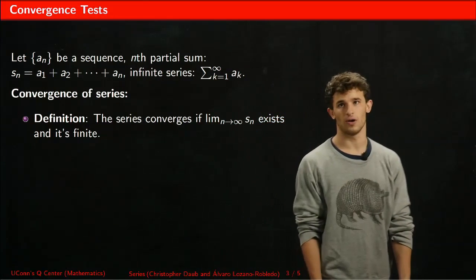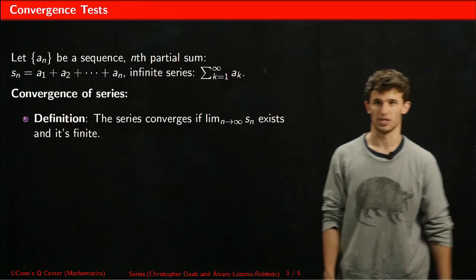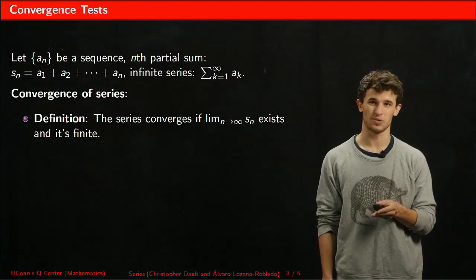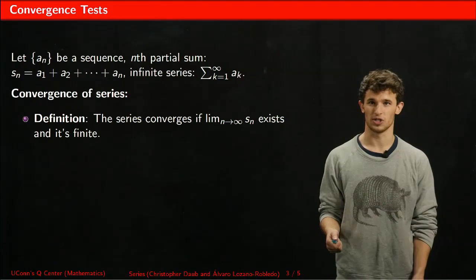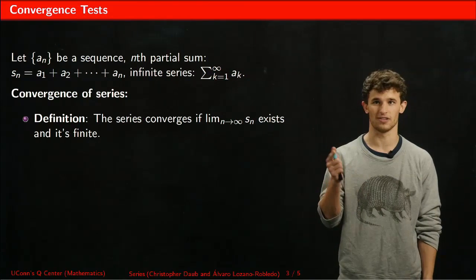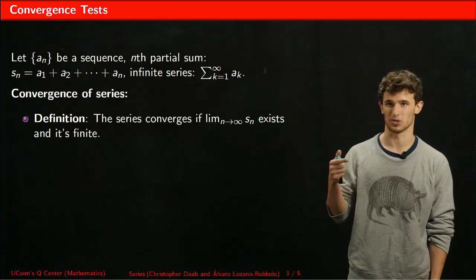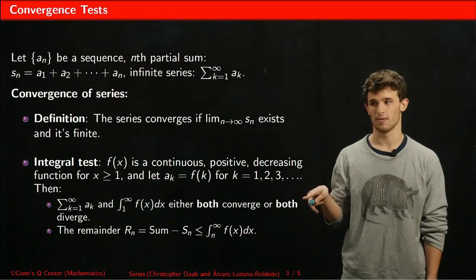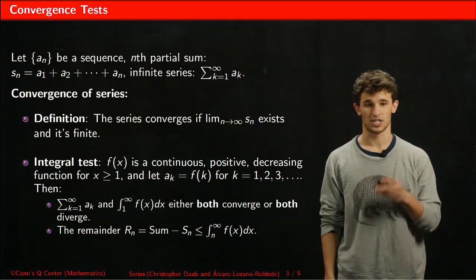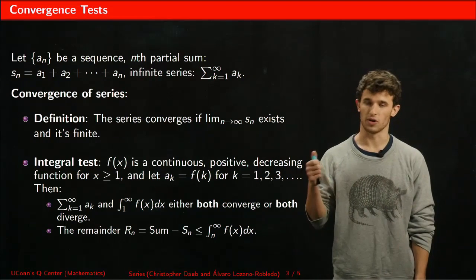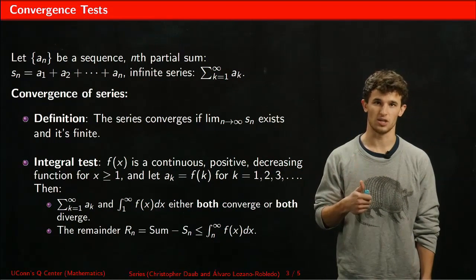Here we have our standard definition of what it means for a series to converge. It means that the sequence of partial sums converges as the limit goes to infinity, which you see right there - the limit as n goes to infinity of Sn, our sequence of partial sums. Following that, we have the integral test, which has three criteria that need to be met in order to perform it.